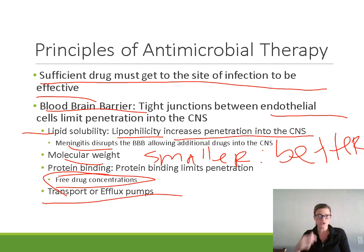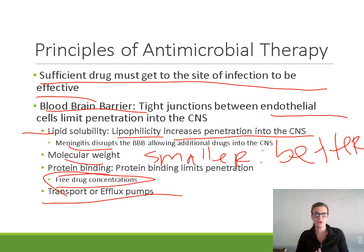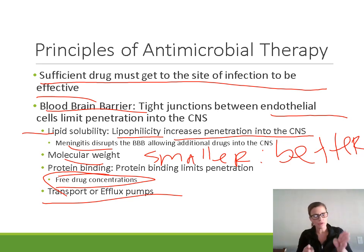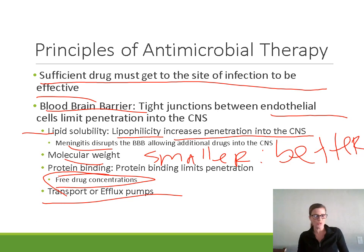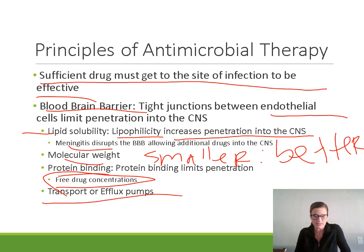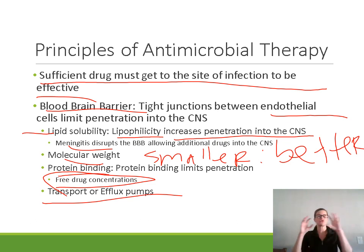Transport and efflux pumps also matter. Some transport pumps help antibiotics get into the CNS, while efflux pumps like P-glycoprotein (PGP) pump drugs out of the CNS. If your drug is a substrate for PGP, that decreases its CNS penetration. So when treating meningitis, you have to make sure your antibiotic actually penetrates the CNS — because sensitivity testing might say a drug is effective against the bacteria, but if it doesn't cross the blood-brain barrier, it won't reach the site of infection.